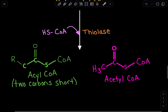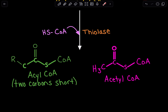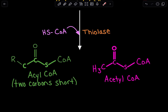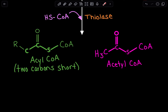What are the products of the first round of beta-oxidation? We get an acetyl-CoA and the remaining acyl-CoA. The acetyl-CoA will go on to the TCA cycle, producing FADH2 and NADH, which go into the electron transport chain to yield energy. The remaining acyl-CoA will go through another cycle of beta-oxidation until we have no more carbons left.